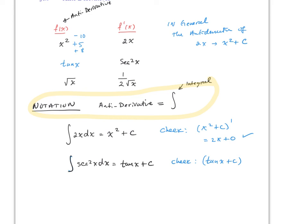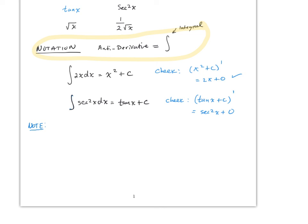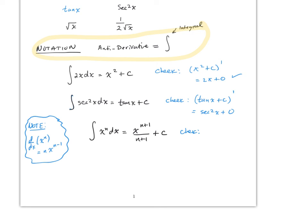For polynomials in general, recall that d/dx[xⁿ] = n·x^(n−1). So the new notation is: the integral of xⁿ dx = x^(n+1)/(n+1) + C. We can verify this: the derivative of x^(n+1)/(n+1) gives (n+1)·x^n / (n+1), the (n+1) terms cancel, and you end up with exactly xⁿ. That's why this rule works.